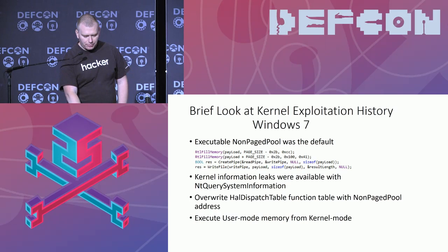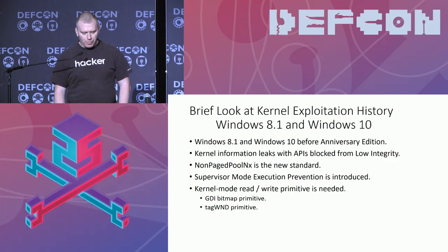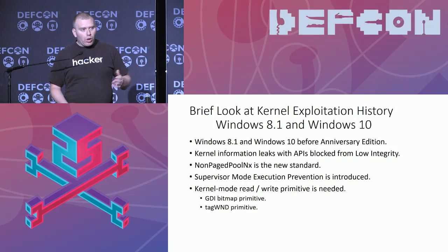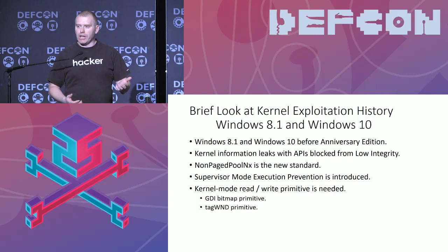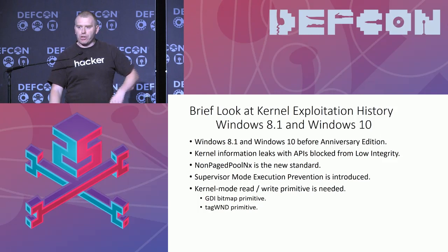Going forward, Microsoft has made quite a lot of improvements security-wise. First of all, the APIs to get the kernel addresses have been blocked from a sandbox, so it's not possible to get these allocation addresses anymore. Furthermore, most built-in APIs use the non-paged pool NX as a standard now, which means the allocations are not on executable pool memory. And finally, user-mode supervisor-mode execution prevention, or SMEP, has been implemented, which means if we try to execute code in user-mode from the kernel, we'll get blocked. So the techniques of Windows 7 don't really work anymore.